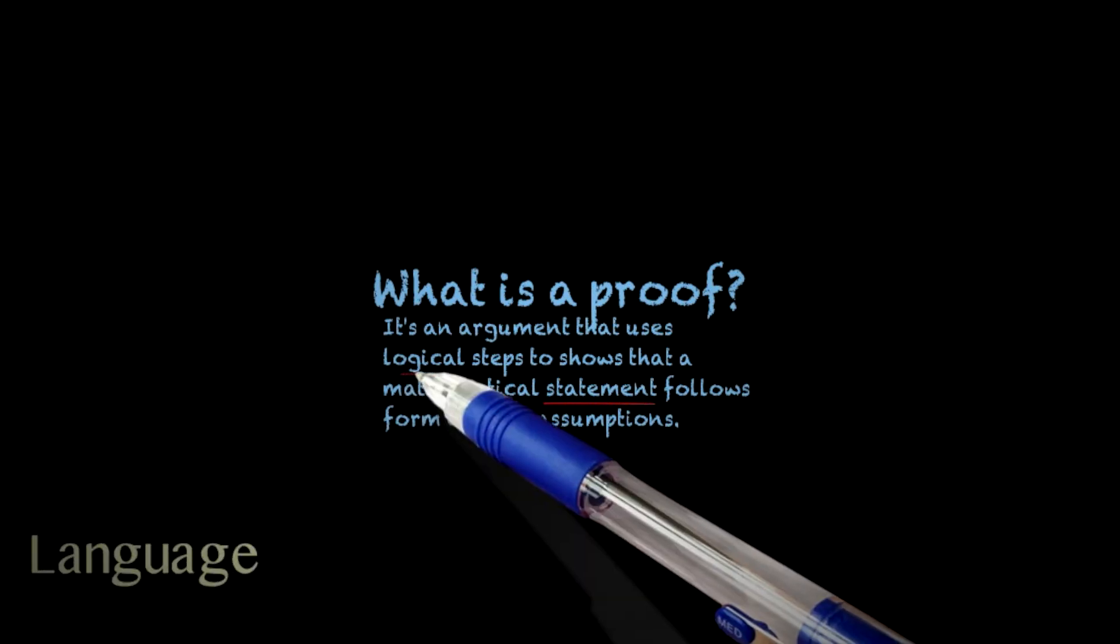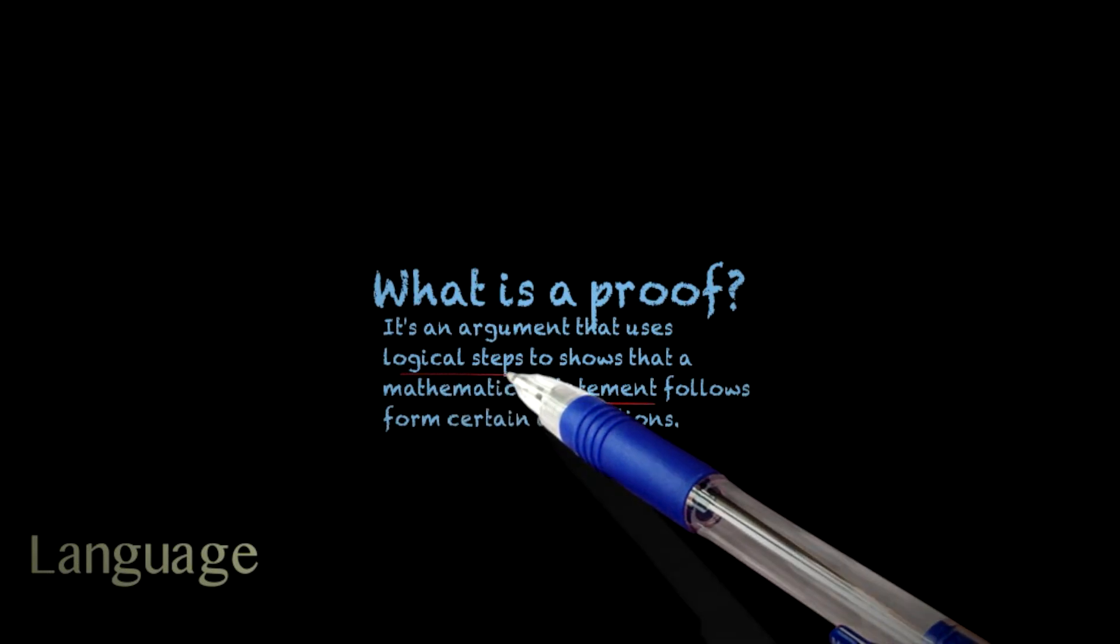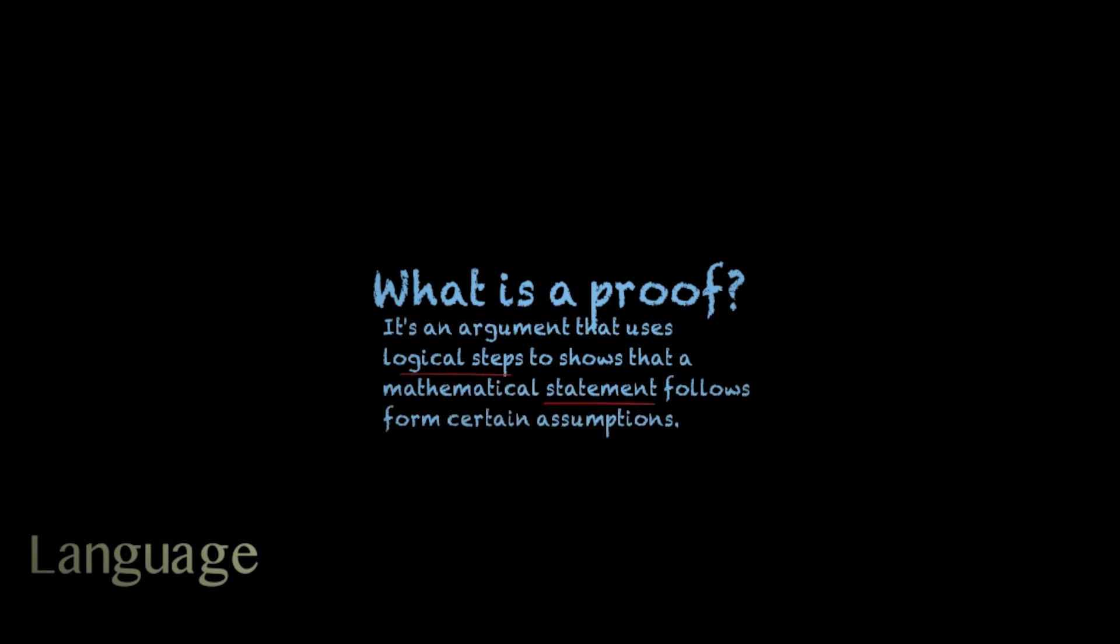A proof is made out of logical steps. In practice, when writing a proof, we can use any reasoning we like so long as everybody agrees that the steps we are taking are logical. But if we want to talk about proofs as concrete objects, to be able to prove things about them, we need to be explicit about which logical steps we are allowed to use. These logical steps are called rules.